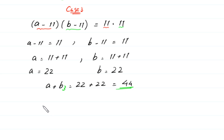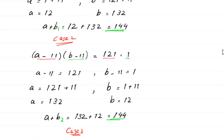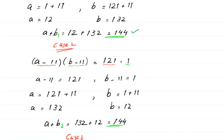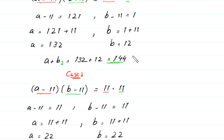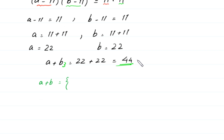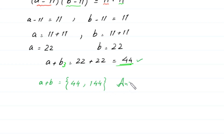Finally, we get the set of solutions for A plus B: A plus B is equal to 144 and 44. So we get two distinct values of A plus B equal to 144 and 44. This is the final answer.